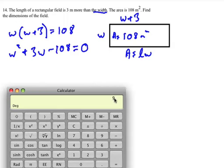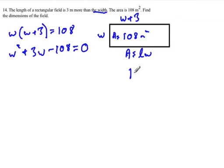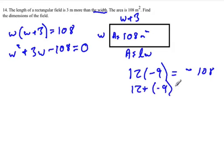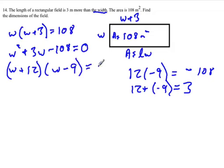So what we're going to use here is 12 times negative 9 is equal to negative 108. And 12 plus negative 9 is equal to 3, positive 3. So our two numbers are 12 and negative 9. So when we factor this, this will be W plus 12 times W minus 9 is equal to 0.